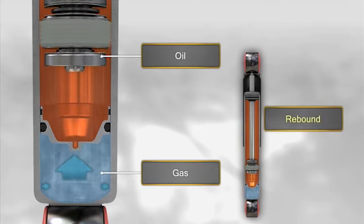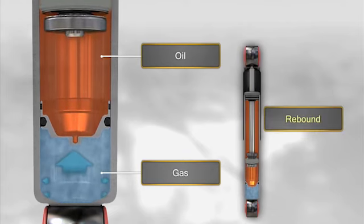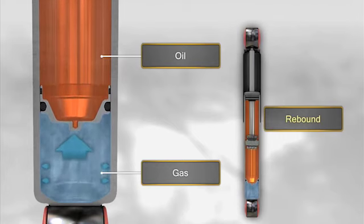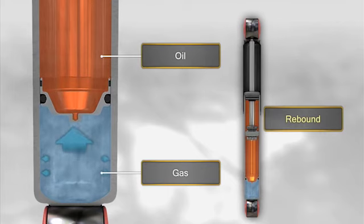By contrast, when the shock absorber is extended, the rod leaves the working chamber, reducing the gas pressure, which causes it to rebound, moving the floating piston again.